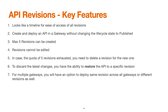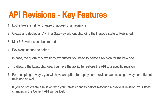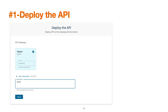To discard the latest changes, we have the ability to restore the API to a specific revision. For multiple gateways, we can either deploy the same revision across all gateways or deploy different revisions. If you do not create a revision with your latest changes before restoring to a previous revision, your latest changes will be lost.